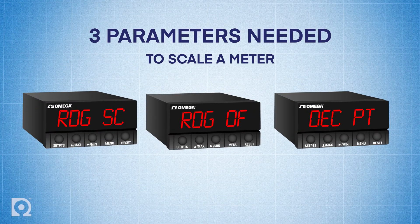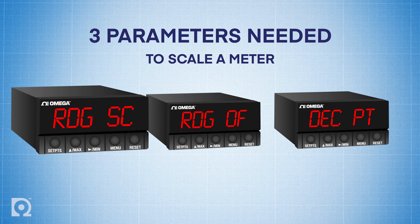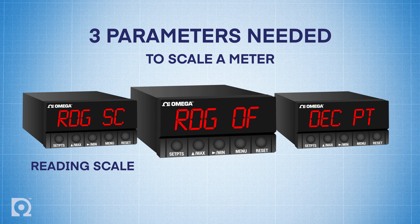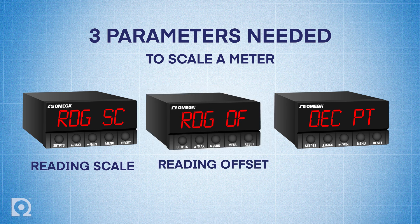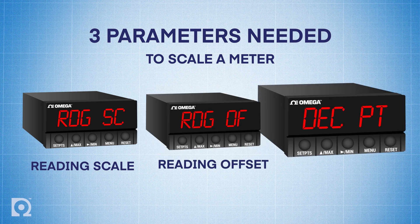To scale the meter, we only need three parameters: RDG-SC, which stands for reading scale, RDG-OF, which stands for reading offset, and DECPT, which stands for decimal point.